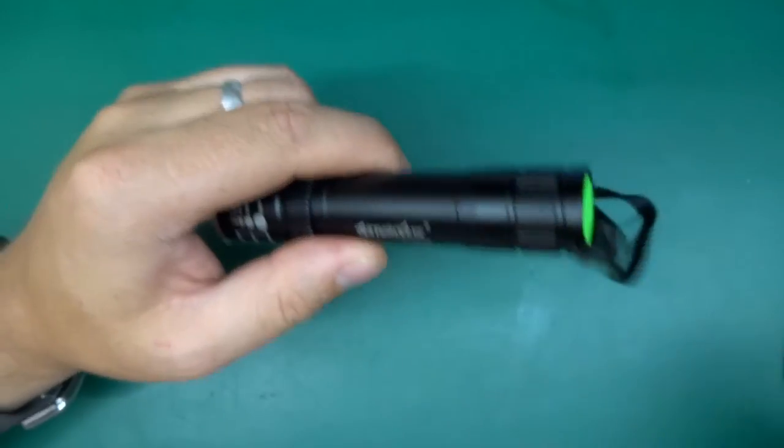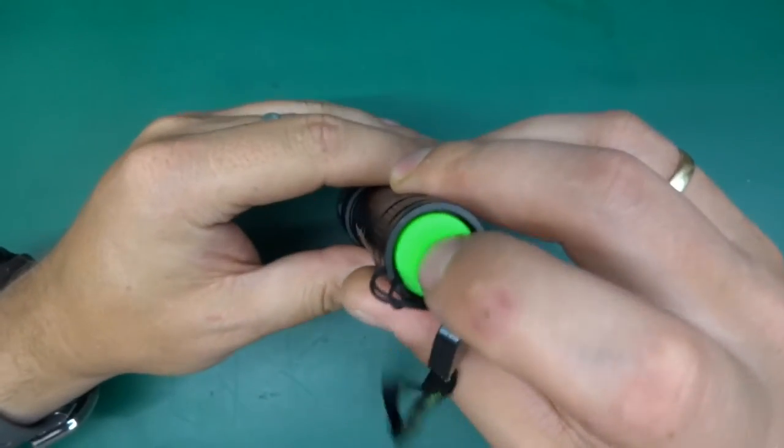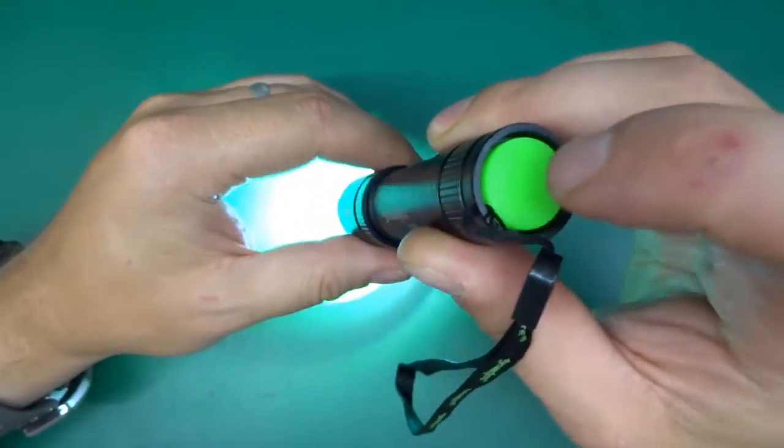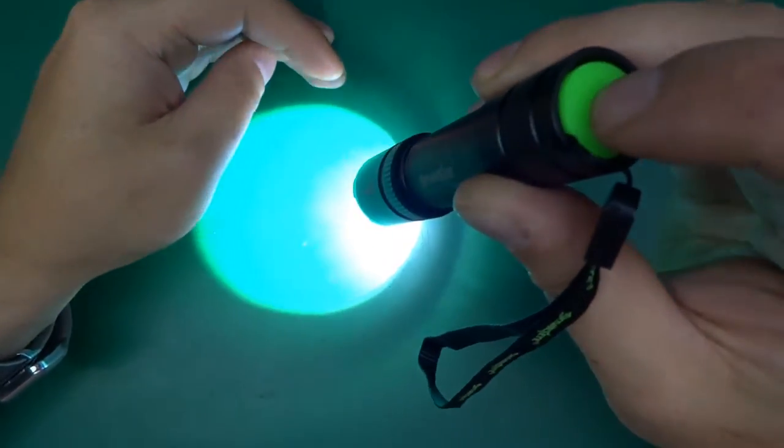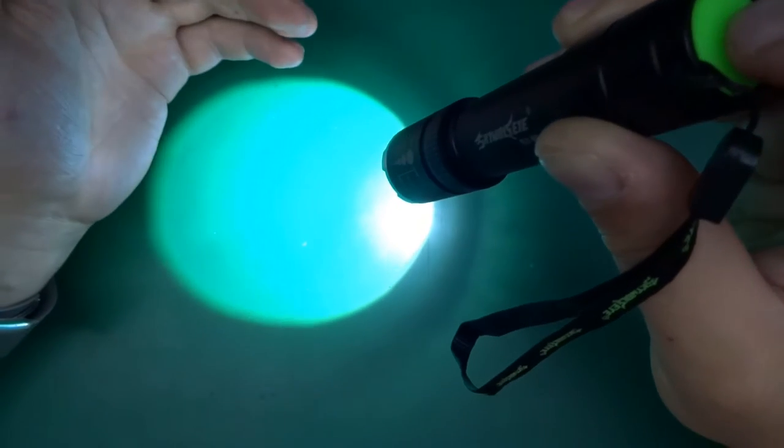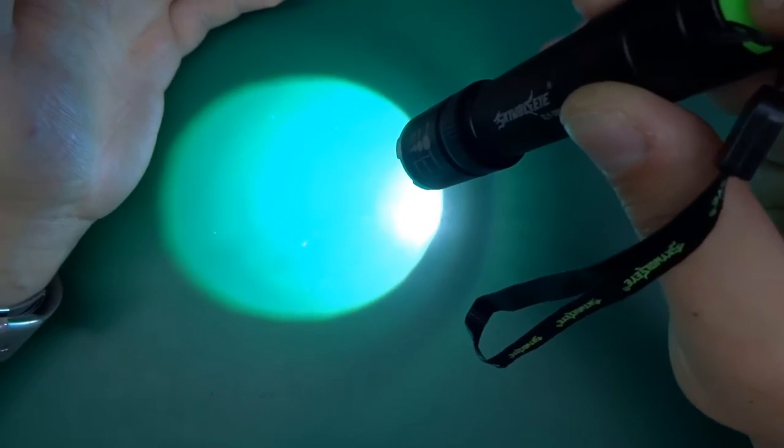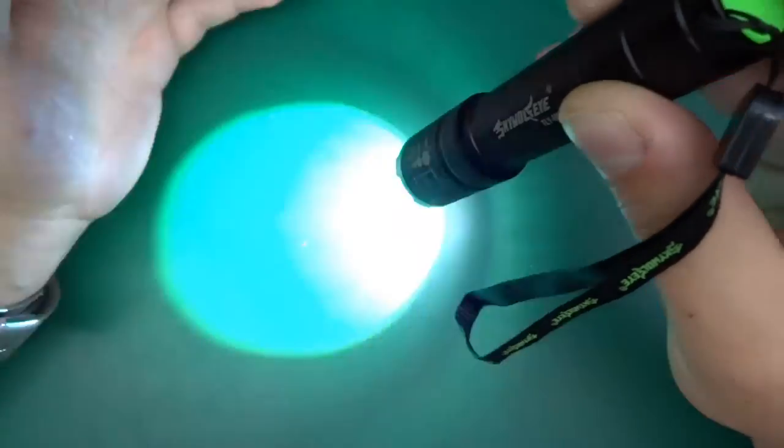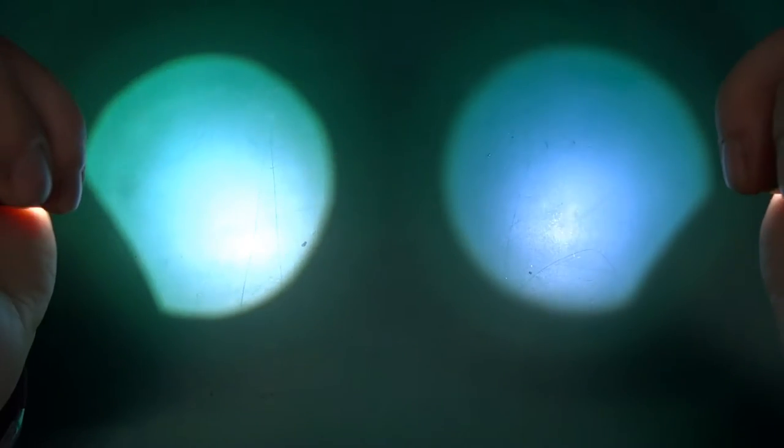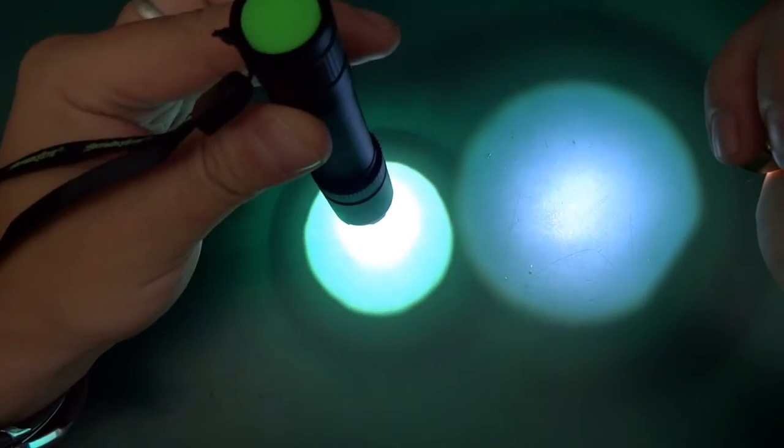Let's switch it on and compare it with the other one. I've put the battery in already. It's the same arrangement where you fully click to switch it on, but a slight press changes the mode. There are three modes: full blast, half blast, and strobe. You can see this one seems a little bit brighter.